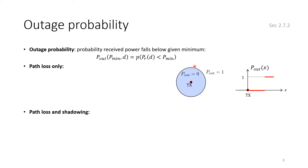If we consider path loss only, we have a deterministic model: a circle with a transmitter at the center where power decays as we move away. Since only path loss is considered, the same power is received at all points on a circle. Within a certain threshold distance, outage probability equals zero; beyond that boundary it equals one — a step function in distance.